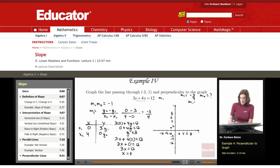m1 times m2 equals negative 1. Now all I have to do is substitute this in: negative 3 fourths times m2 equals negative 1. I'm going to multiply both sides by negative 4 thirds. That gives me negative 1 times negative 4 thirds, or m2 equals 4 thirds. Now I found this slope.